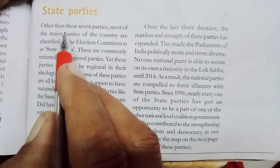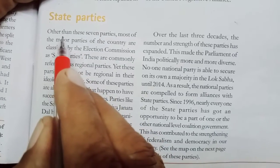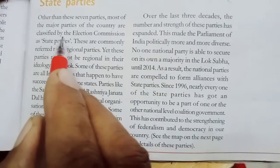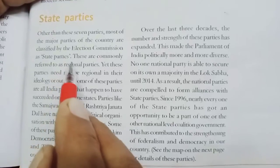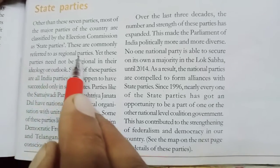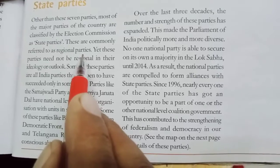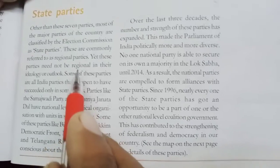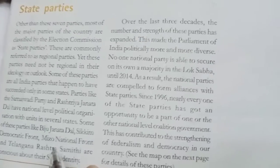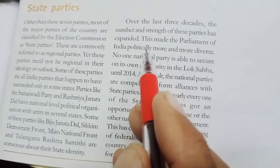Presently there are only seven national parties and the others are state parties, but state parties are also very important. Most of the major parties of the country are classified by the Election Commission as state parties, commonly referred to as regional parties.